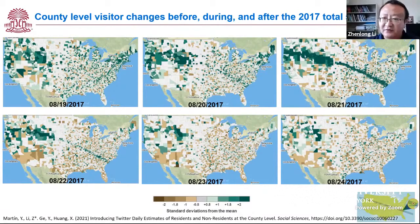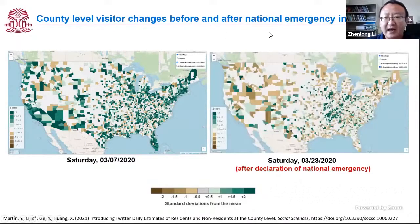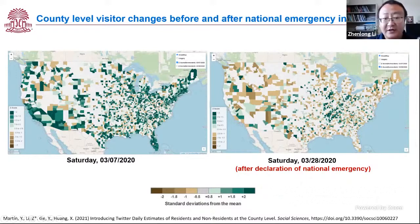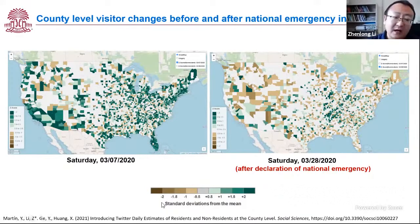Using the same method and looking at 2020, this map shows county-level visitor changes before and after the national emergency declaration in March. On Saturday March 7th, normally on weekends there is a lot of movement and travel. But on Saturday March 28th, movement had decreased a lot — you can see a lot of brown color, meaning many people did not travel and stayed at home in their own county. We have a publication for this; if you're interested, you can look at the methods and applications in more detail.